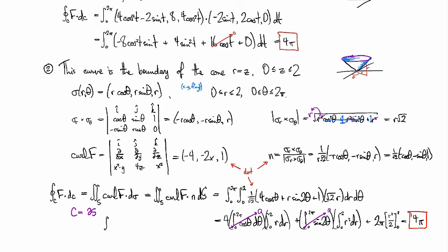then it doesn't matter how you get from A to B. The integral of a gradient vector field is path independent. Well, guess what?